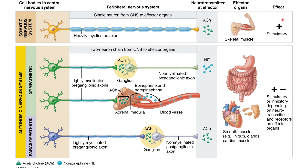Comparing somatic versus autonomic: in the somatic system, the effect is almost always stimulatory — it's cholinergic and always results in muscle contraction. In the autonomic nervous system, the effect can be stimulatory or inhibitory depending on what's being released — acetylcholine or epinephrine. That's a key difference. Focus on pre- and post-ganglionic neurons: know whether they are cholinergic or adrenergic, what they release, their target organs, and the resulting effects.